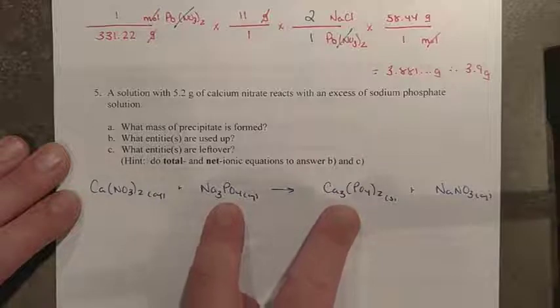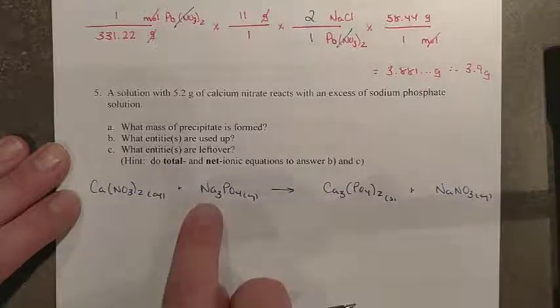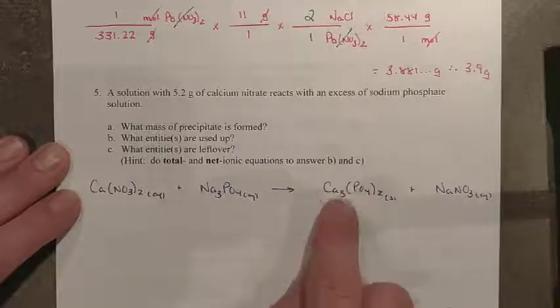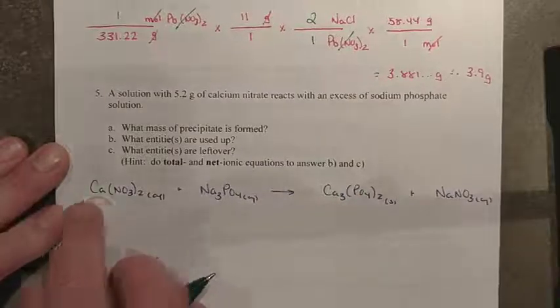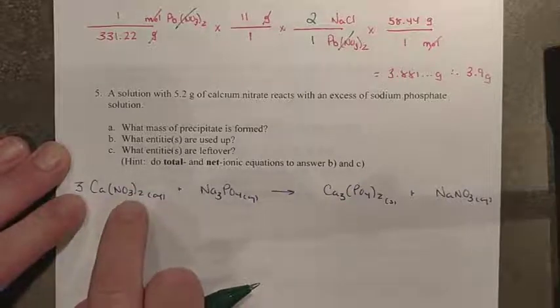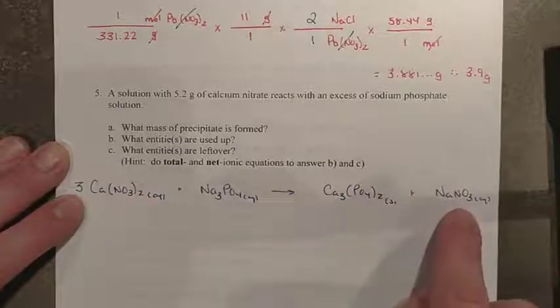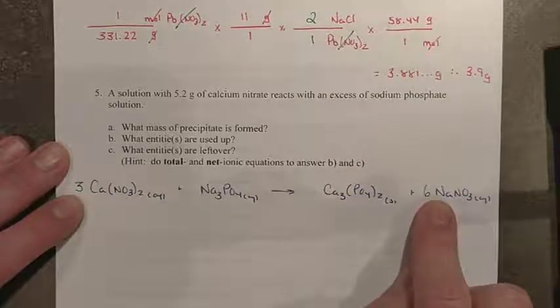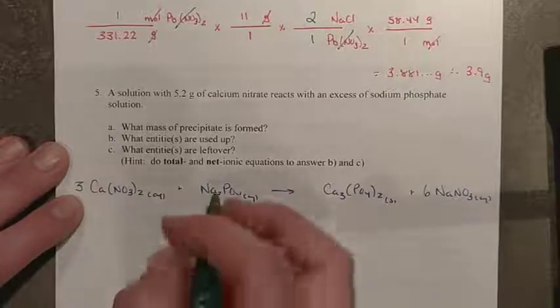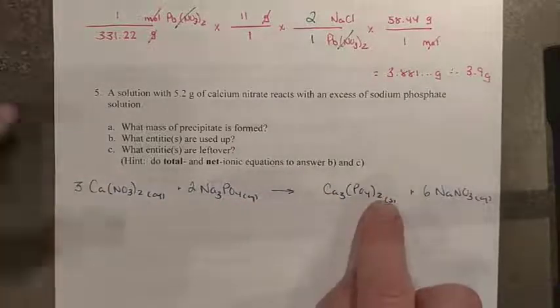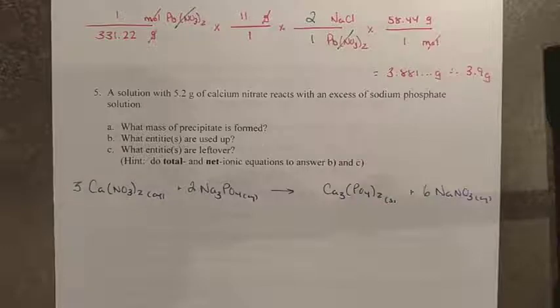A couple of good places to start here with balance. I got three calciums, and I have three sodiums. It doesn't really matter where we go. I'll pick calcium arbitrarily. Three calciums here. There's only one here, so we'll have to triple this. That gives me three times two nitrates, or six nitrates. So I'll have to put a six over here. That gives me six sodiums. There's only three here. I'll have to double this, and then that gives me two phosphates. No more numbers. That one's finally balanced.